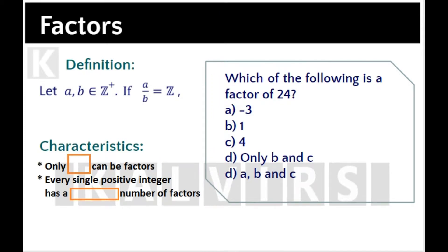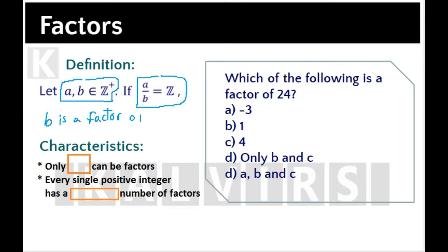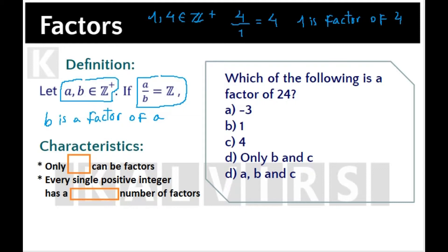The factors of a number are those positive integers that divide the number evenly. According to the definition, if A and B are positive integers and A over B is just a positive integer, then B is a factor of A. For instance, 1 and 4 are both positive integers and 4 over 1 is an integer, so 1 is a factor of 4. Only positive integers can be factors, and every single positive integer has a finite number of factors.